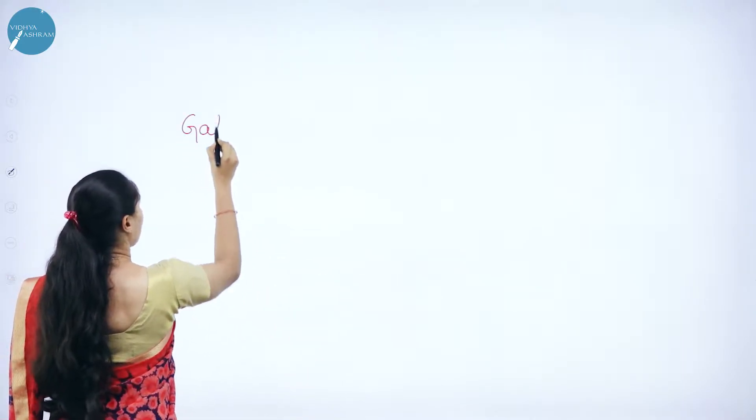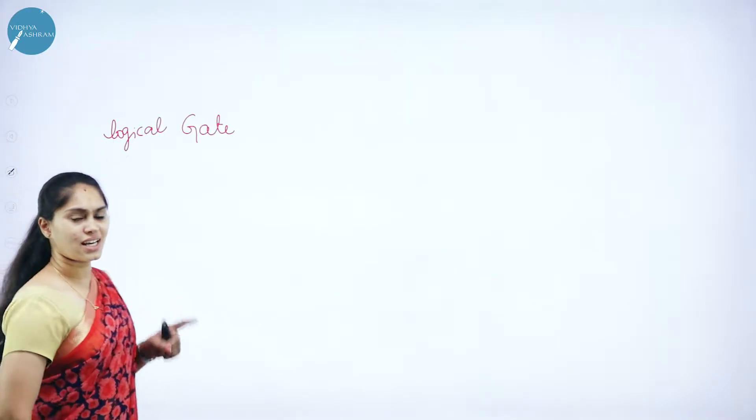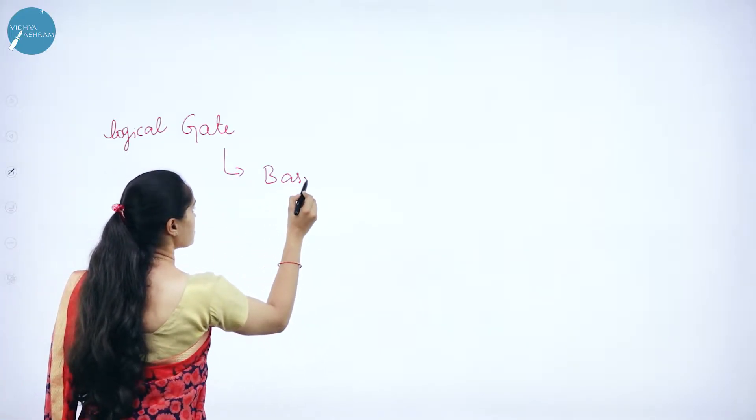Before getting into the important questions or frequently asked questions, I just wanted to give a brief introduction regarding this chapter called Logic Gates. The computer understands only zeros and ones — zero means low or false, and one means high or true. When we deal with zeros and ones, we have a concept called a gate. A gate, also considered a logic gate, will accept one or more input signals and produce only one output signal.